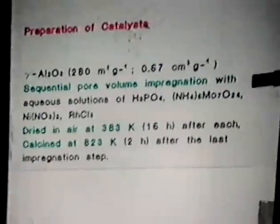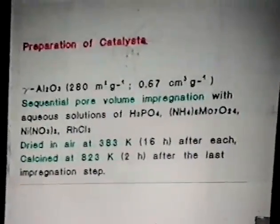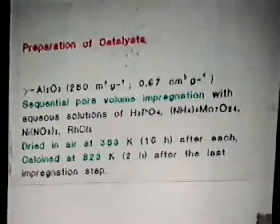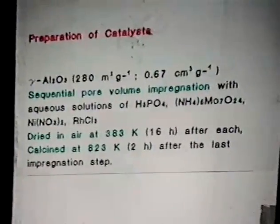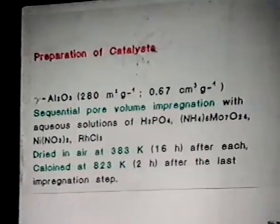We prepared our catalysts by a method usually used in university laboratories: sequential pore-volume impregnation of the alumina support with aqueous solutions of phosphoric acid, ammonium heptamolybdate, and nickel nitrate. For comparison, we also prepared some rhodium on alumina catalysts. We dried our catalysts in air at 383 K and calcined the catalyst after the last impregnation step at 823 K. We prepared a series of catalysts with different phosphorus loading but the same metal loading, though for time reasons I can show only the results of couples of catalysts with the same metal loading, with and without phosphate.